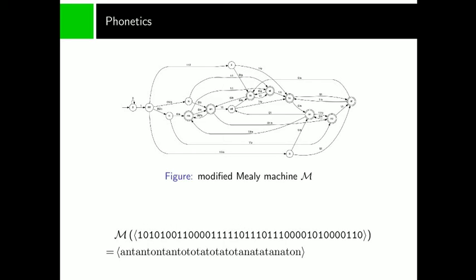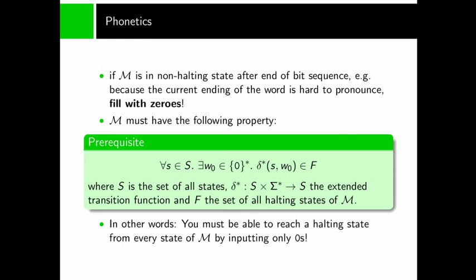This is the output for a sample sentence. You have probably noticed that some states are represented by a double circle. These states are called halting states. These are states where the spoken sentence can end according to the phonotactics. For example, in the figure you can see that N, G is not a halting state, because a sentence cannot end in a consonant cluster. If you end up in a non-halting state after you read your bit sequence, you can just read imaginary zeros until you reach the halting state. For this to work out, the Mealy machine has to have the property to end up in a halting state from every state by inputting only zeros. Otherwise, you could end up in a loop and get an infinite sentence.